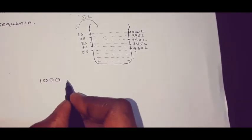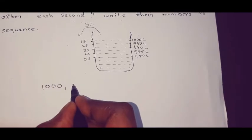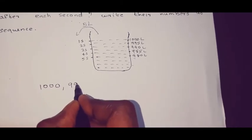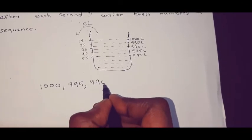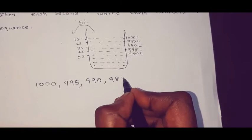If we add 1000 minus 5 liters, first term is 1000. If we add 1000, 995, 990, 985. This is the sequence.